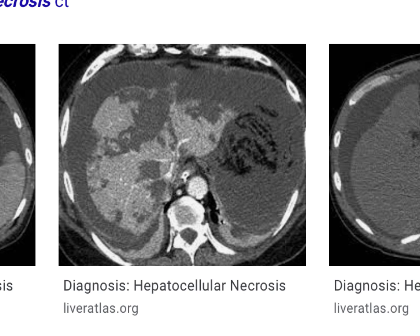This is an axial cross-section of someone's body at the level of the liver. Here we have the spine — so this is the back of the body, this is the front of the body, this is the right side, and this is the left side. Here is the spine, here's the spinal cord, and then this is the vertebral column.